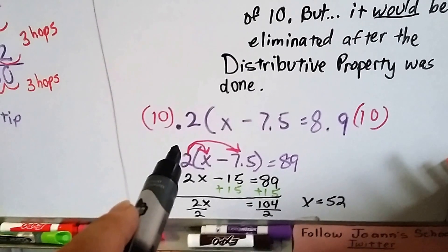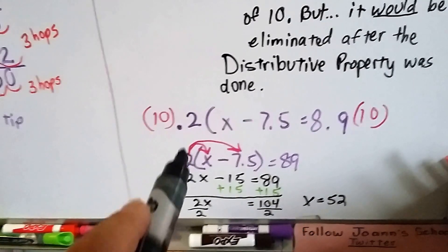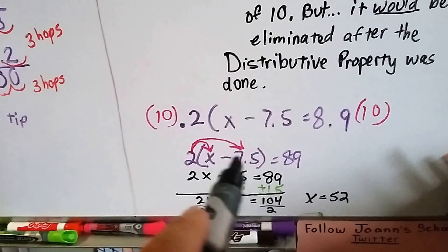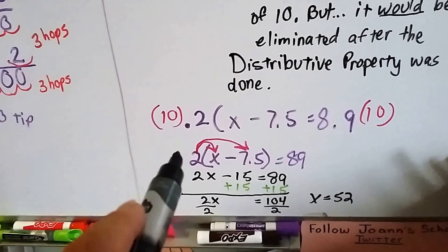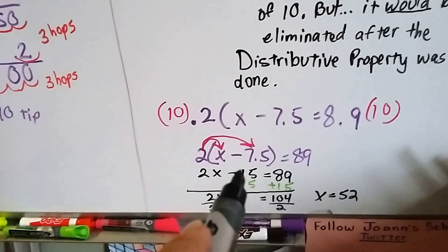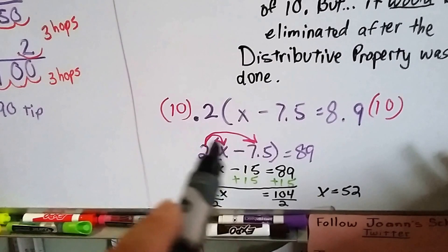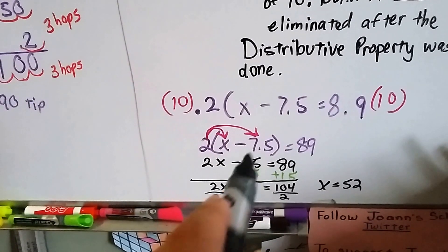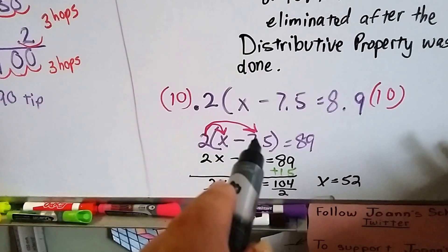So let's say we did multiply the 0.2 and the 8.9 by powers of 10. Then that would give us a 2 and an 89. 2 times X is 2X. 2 times negative 7.5 is a positive 2 and a negative 7.5. So that would give us a negative 15 because it's a positive and a negative. So now we didn't have to worry about getting rid of the decimal. It did it on its own when it was multiplied by 2.